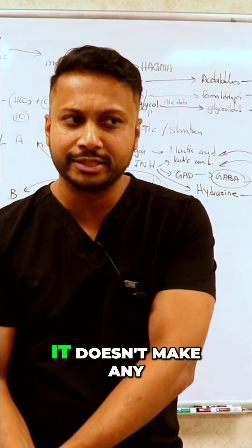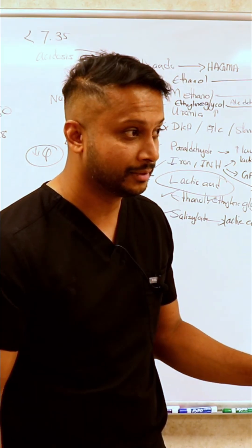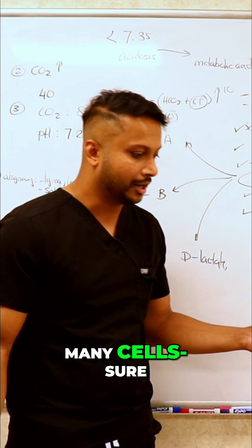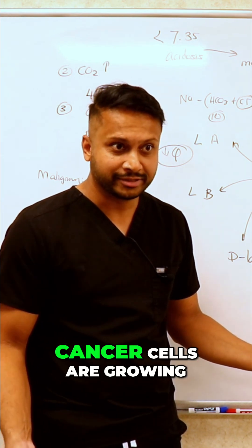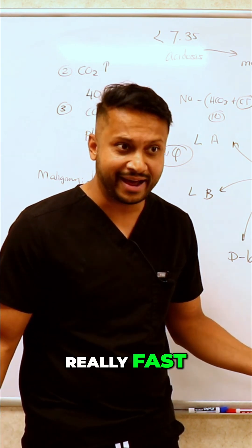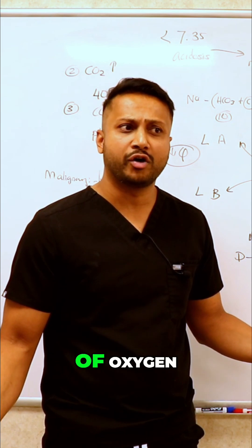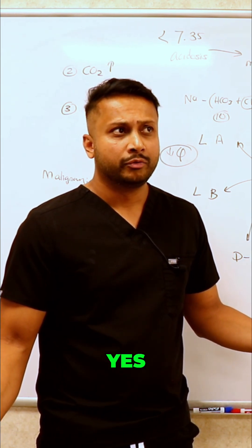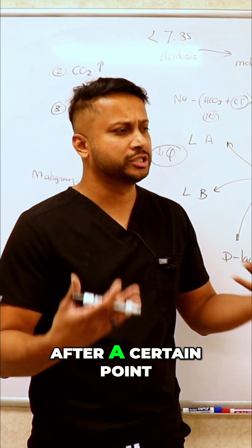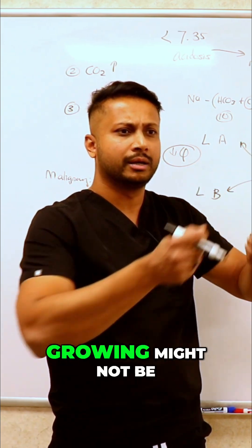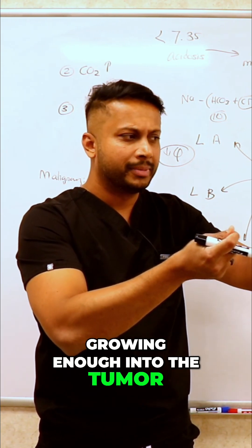If you have too many cells, are those cells replicating too much? Yes — cancer cells are growing really fast, which means they require a lot of oxygen. Even if your systemic oxygen is okay, after a certain point the blood flow growing into the tumor might not be growing fast enough to keep up.